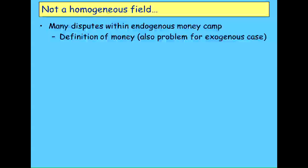There's also the very simple basic question: how do you define money? That's an issue for both the endogenous and exogenous money cases. If you think of Milton Friedman's definition — money is what falls out of the Federal Reserve's helicopter as it flies over the country — that's a pretty simplistic model. We want to be slightly more realistic than that.